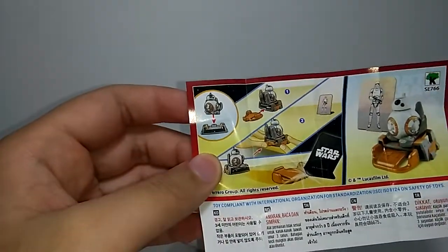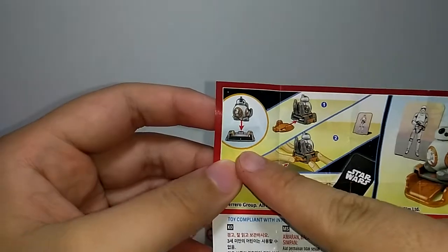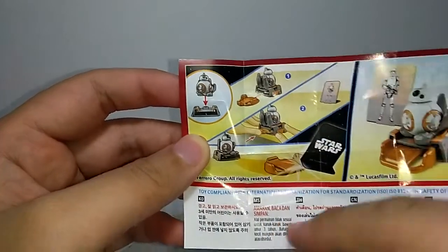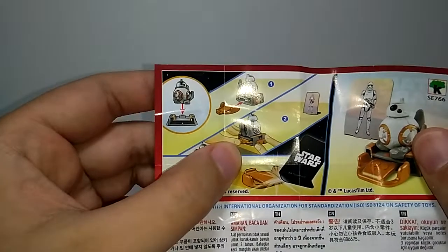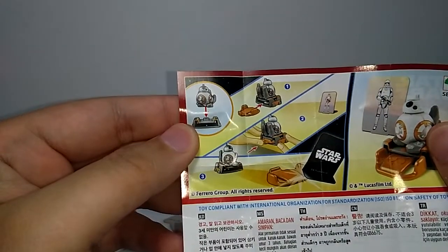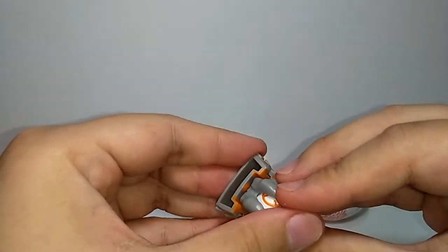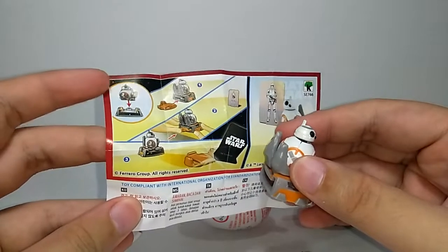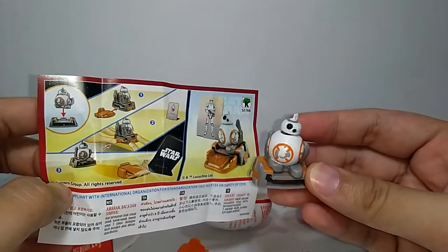So, what does BB-8 do? First, they ask you to put him in the stand and insert the orange part. Then, you press the button at the back to fling it. Here is what they are asking you to do. Oh, so that's supposed to be the back part?